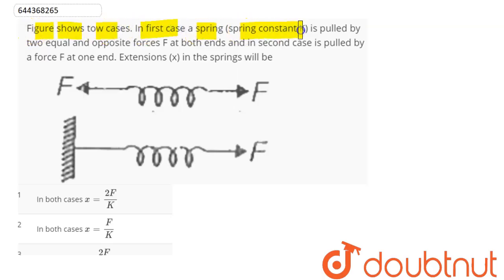In first case, a spring with spring constant k is pulled by two equal and opposite forces F at both ends. In second case, it is pulled by a force F at one end. Extensions x in the springs will be...